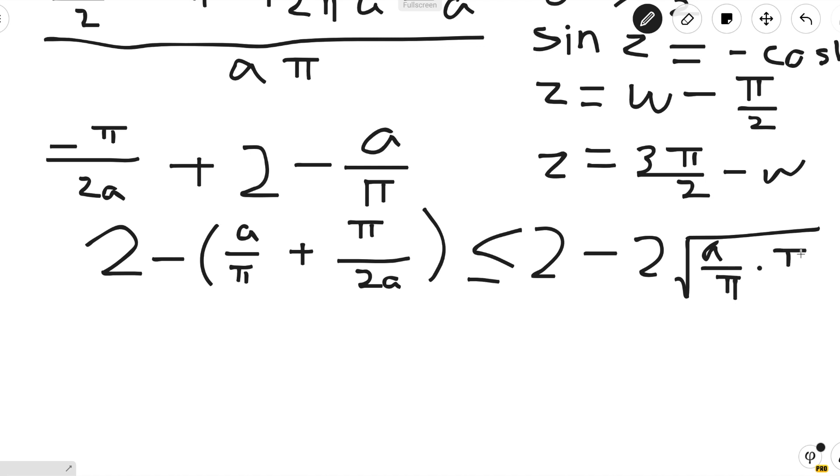Now conveniently, the π's and the a's cancel out. So we just get that this is less than or equal to 2 - √2. And this is the answer that we're looking for.